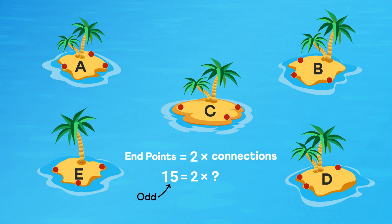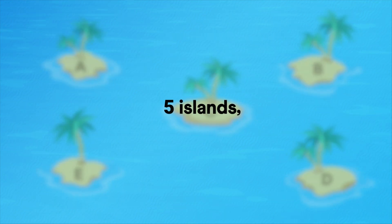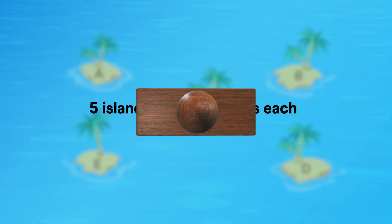But we needed 15, an odd number. So there's a clash. 15 endpoints would mean 7 and a half bridges. Half a bridge? That doesn't make sense. So 5 islands each connecting to exactly 3 others is impossible.